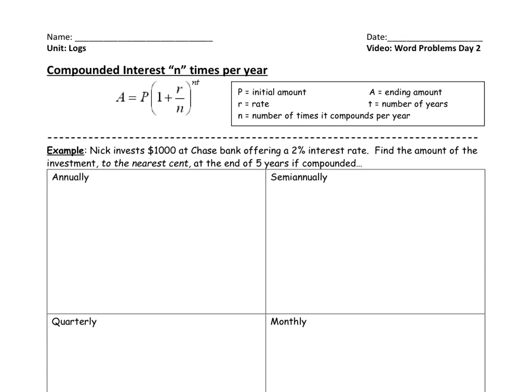Here's the formula, just like the one we worked with yesterday, where P is your initial value, A is your new value or ending amount, r is the rate, n is the number of times we are compounding something, and t is the years.